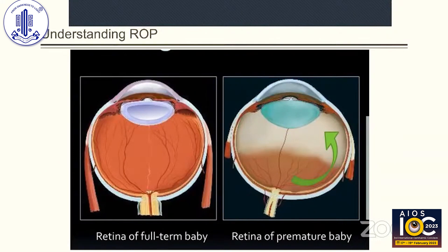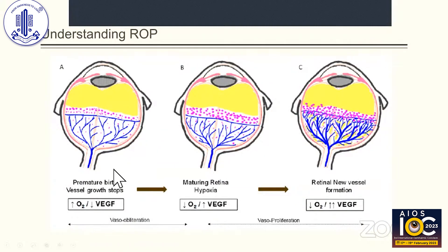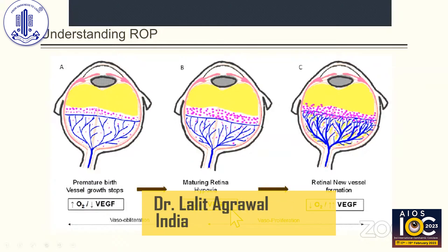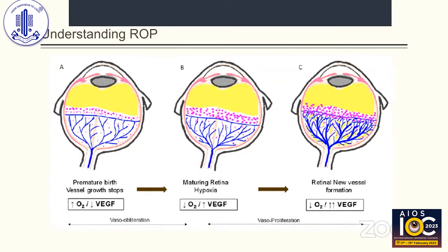ROP is not a congenital disorder; it develops after the child is born, usually taking three to four weeks to develop. When a premature child is born, the retina is not completely grown. Once exposed to normal atmospheric oxygen, there is a downregulation of vascular endothelial growth factor, leading to sudden stoppage of retinal vessel growth — the vaso-obliterative phase. After a week or two, in the absence of adequate oxygen, there is upregulation of VEGF and an attempt to vascularize the avascular retina. If this growth is normal, there is no ROP; however, abnormal growth leads to retinopathy of prematurity.